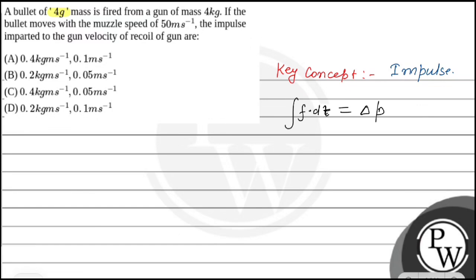In the question, we have a 4 gram bullet fired from a 4 kg gun, and the muzzle speed is 50 meter per second. We can write that the impulse imparted to the gun equals F·dt, which equals change in momentum. Change in momentum is final minus initial. Final is: mass of bullet (4/1000 kg) into velocity 50 m/s, minus initial — initially the gun was at rest.